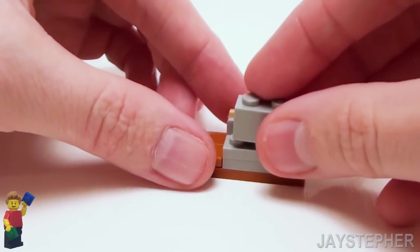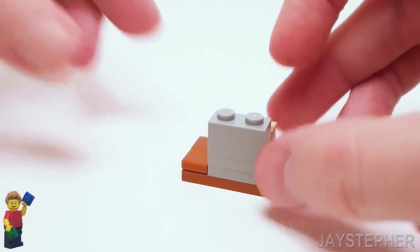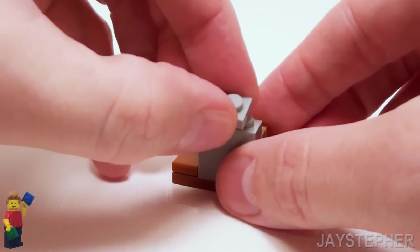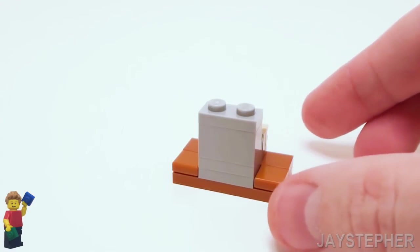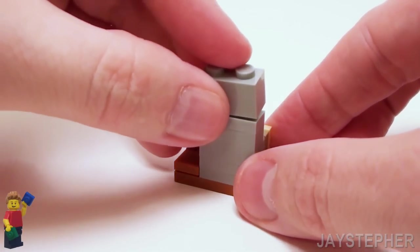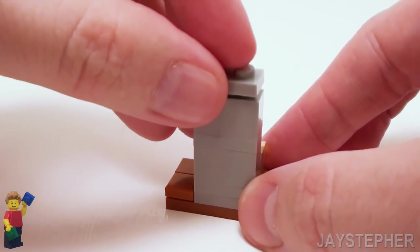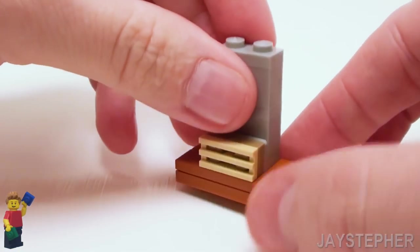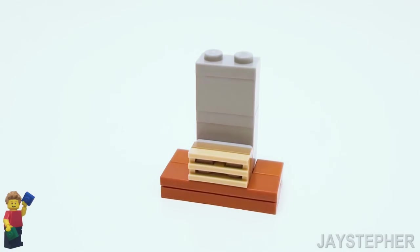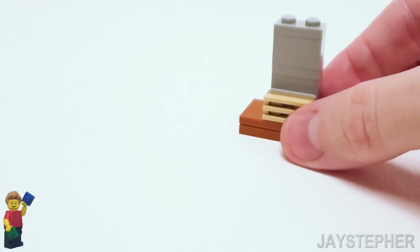For the back, place down a 1 by 2 brick, a 1 by 2 plate, another 1 by 2 brick, followed by a 1 by 2 plate. Let's set this off to the side.